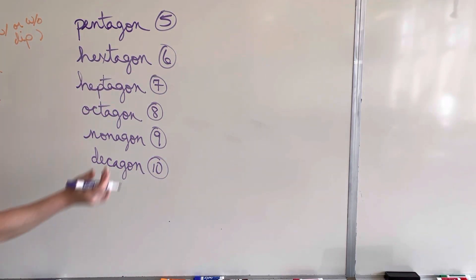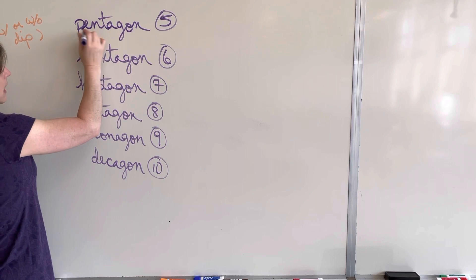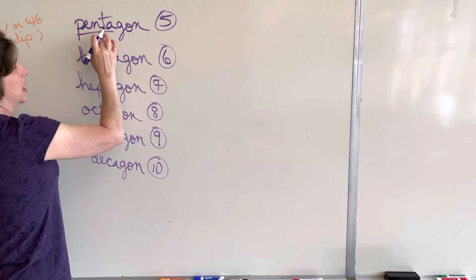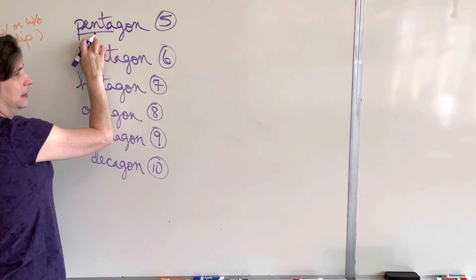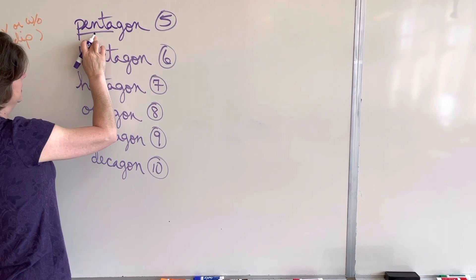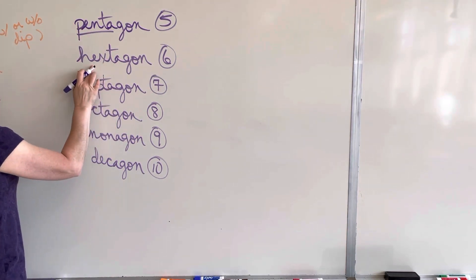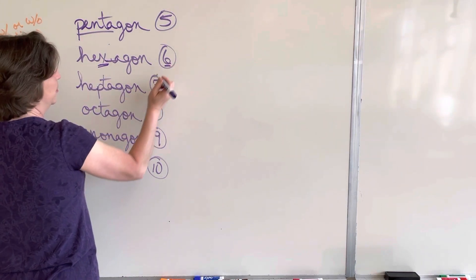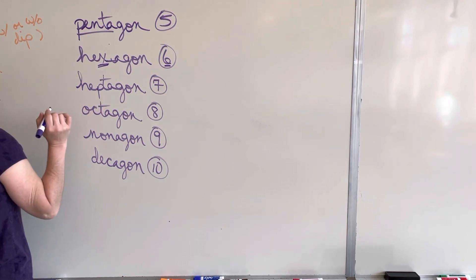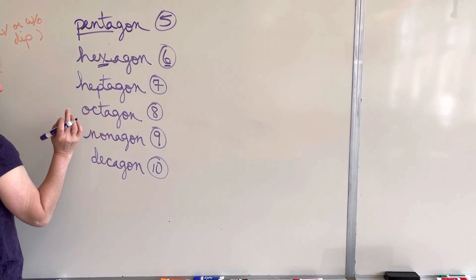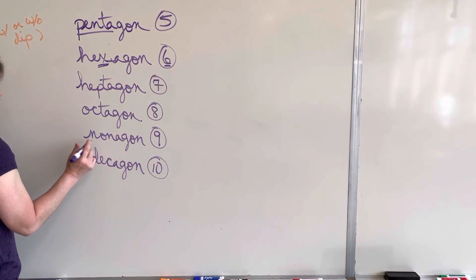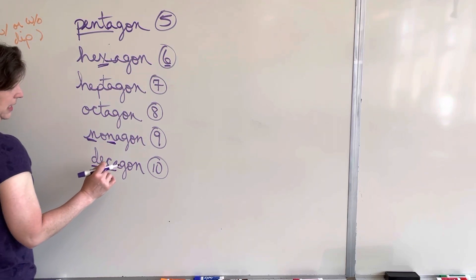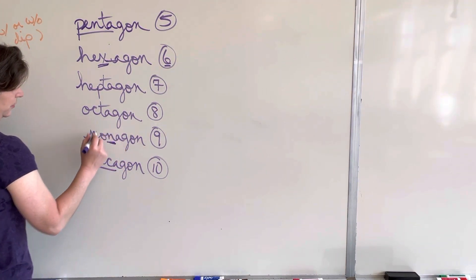Some of these have words you might recognize. Pentagon — the building in Washington D.C. has five sides, and a pentathlon has five events. Hexagon — both 'hexagon' and 'six' have an X, so that's how you remember. Heptagon has seven. Octagon, like an octopus, has eight. Nonagon — both 'nonagon' and 'nine' start with N. And decagon — a decade is ten years, and a decathlon is ten events. So those are some ways to remember the names.